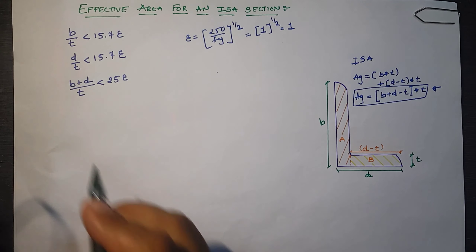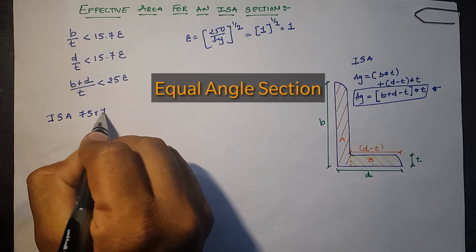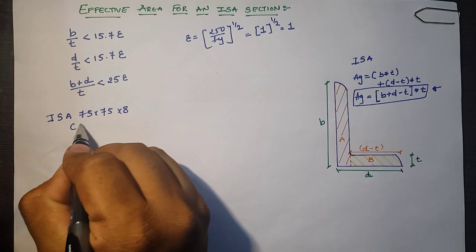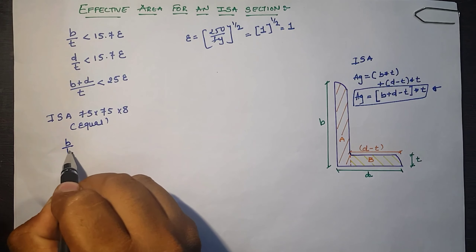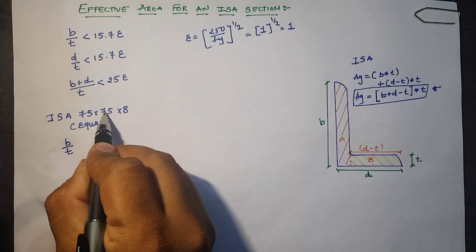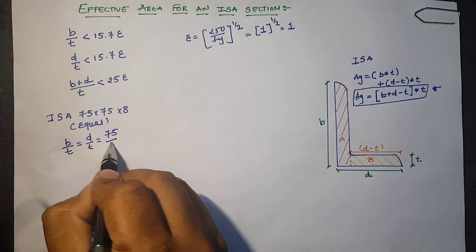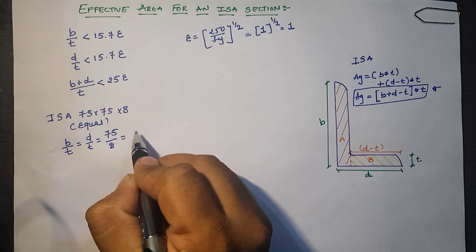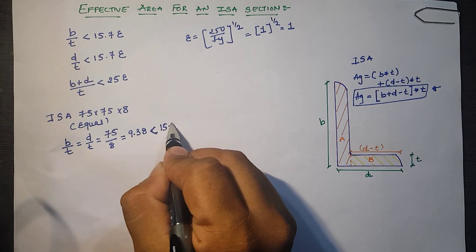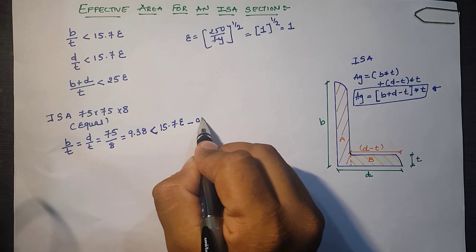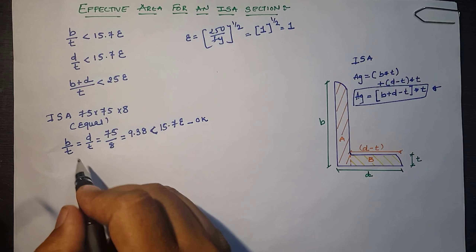Let us take Example 1: ISA 75×75×8, an equal angle section. Checking the first criterion: b/t = 75/8 = 9.38, which is less than 15.7ε. Since b = d = 75, d/t is also 9.38, less than 15.7ε. Both the first and second criteria are satisfied.